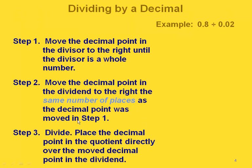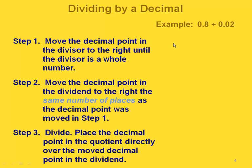Let's go through the steps of dividing by a decimal and do an example as we go through. Our example is eight tenths divided by two hundredths. Since our divisor is not a whole number, we're going to have to move our decimal point.